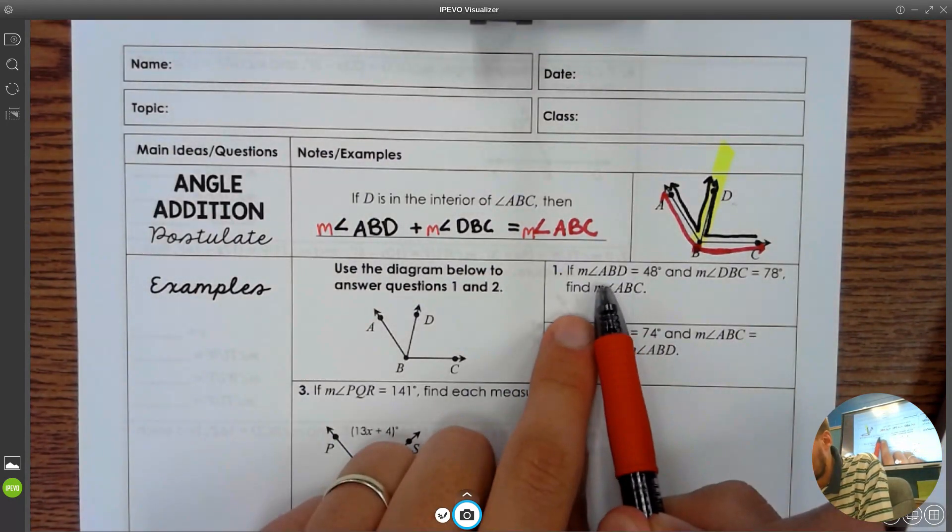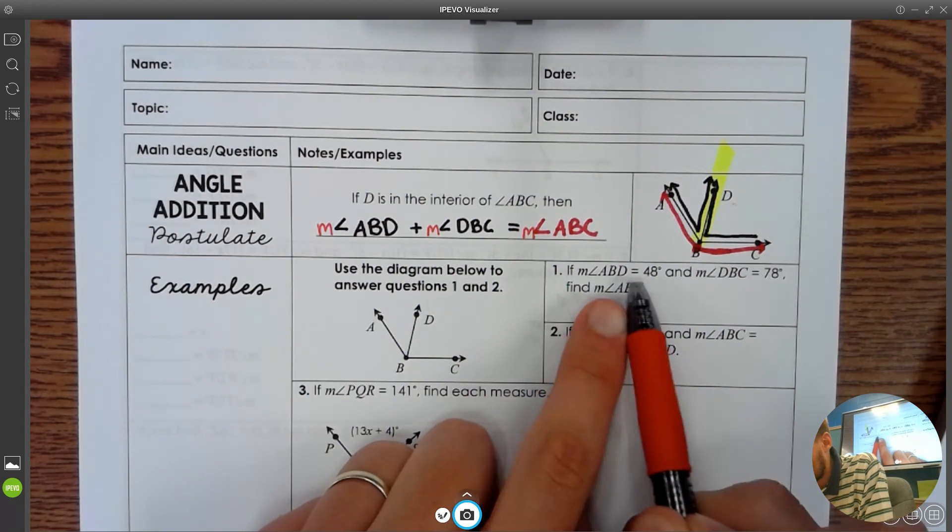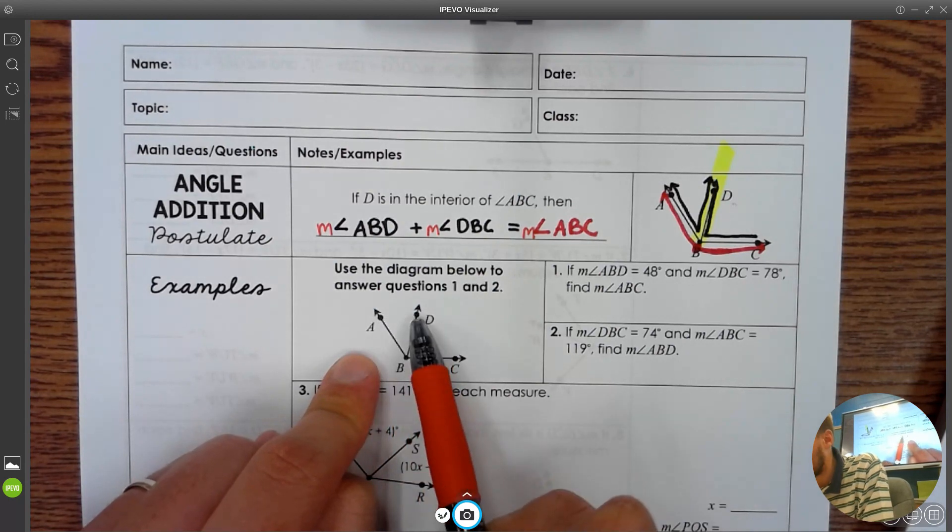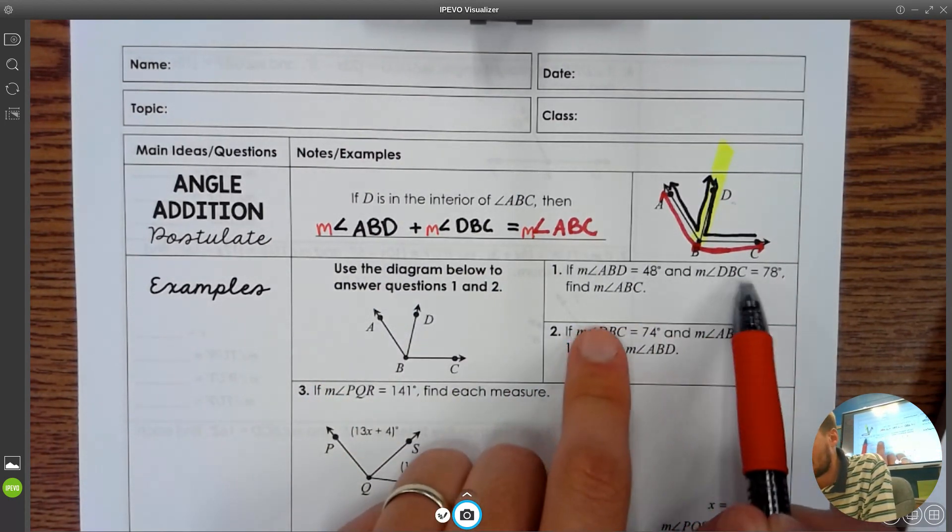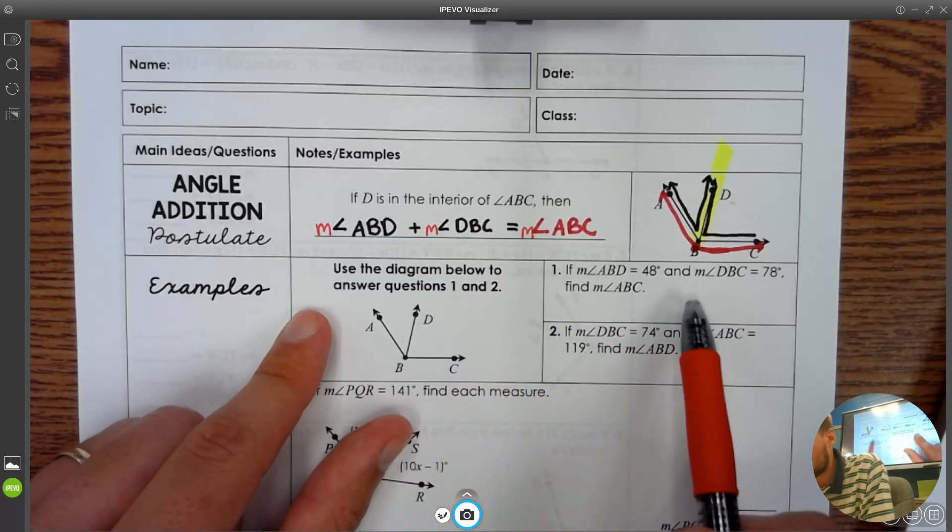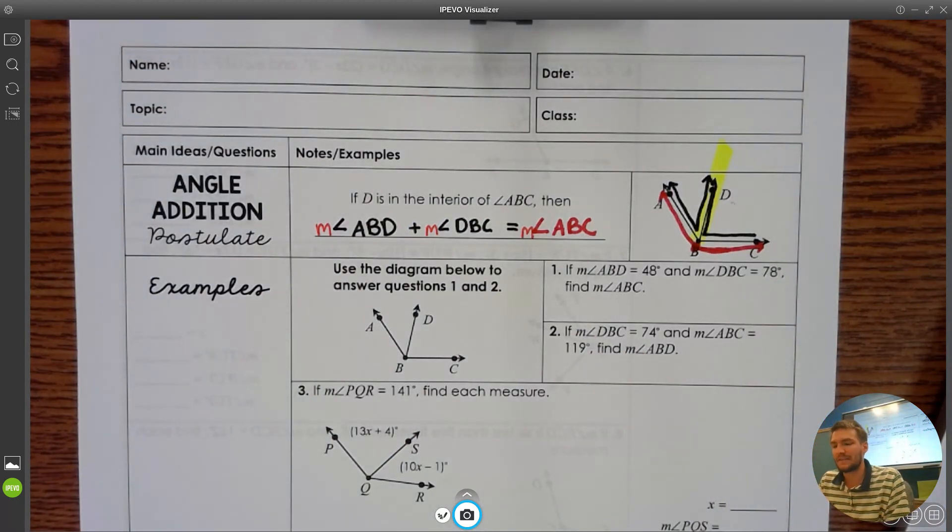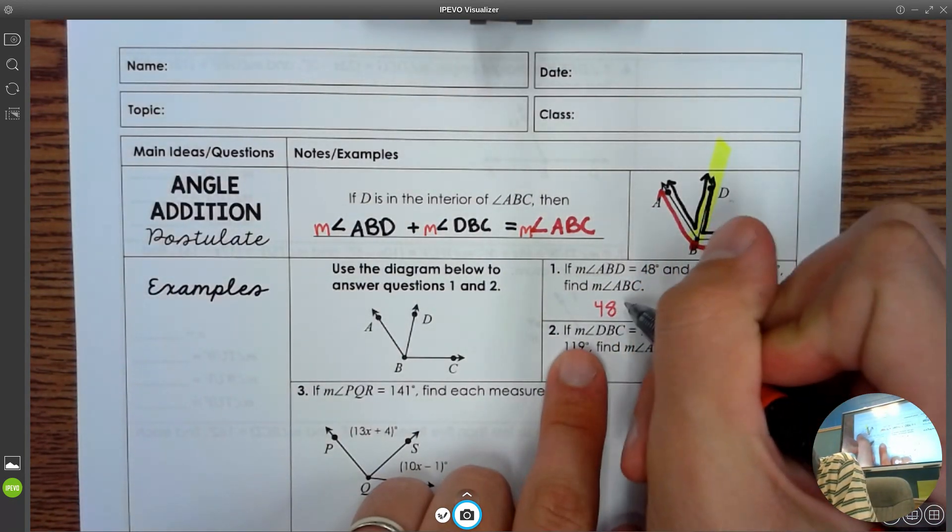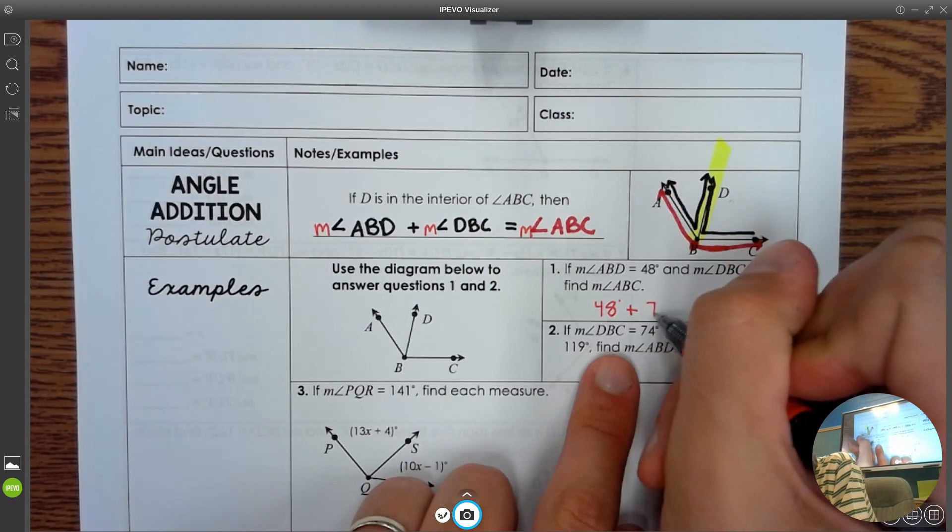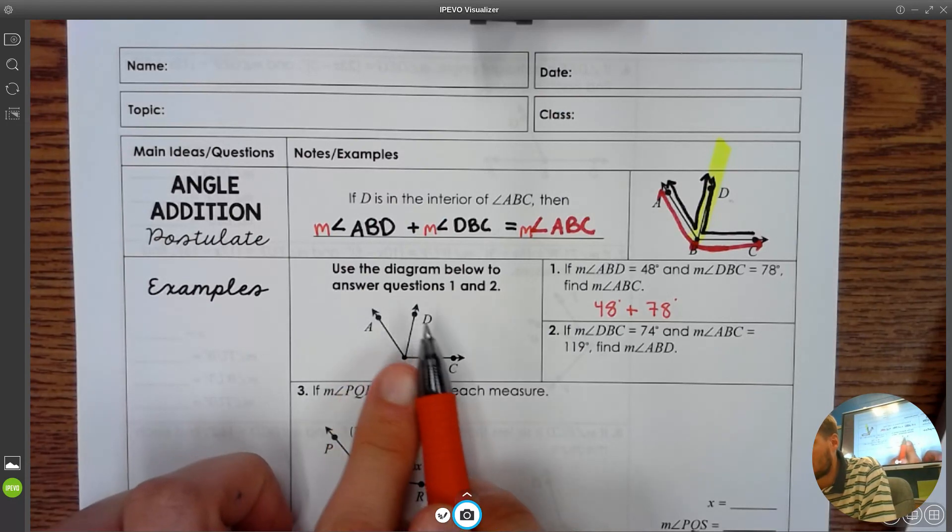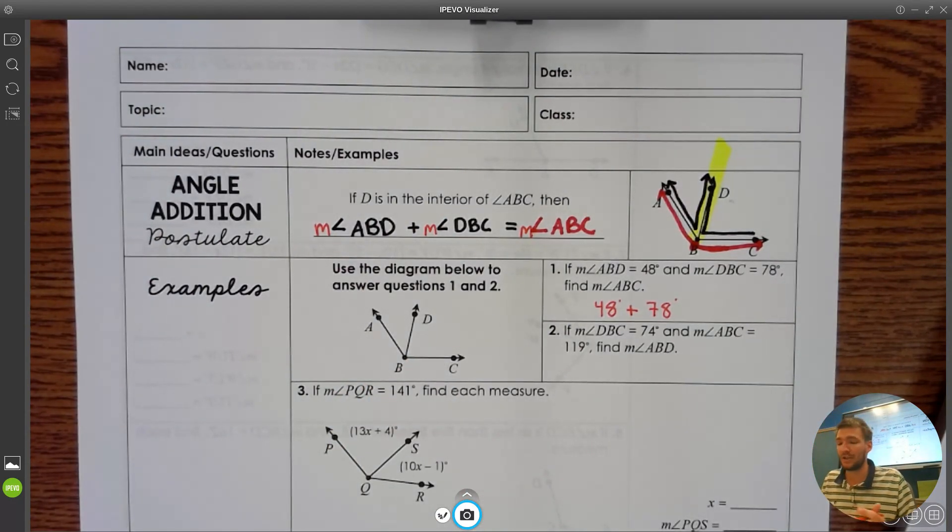Number one says that measure of angle ABD is 48. So if I look at this picture, I see that the left piece here, ABD, is going to be 48. And that DBC is 78. How are we going to come up with a simple little equation that's going to help us find the answer here? It's as easy of an equation as you could possibly make. 48 degrees, and if you add that with 78 degrees, that's going to be the left piece plus the right piece.